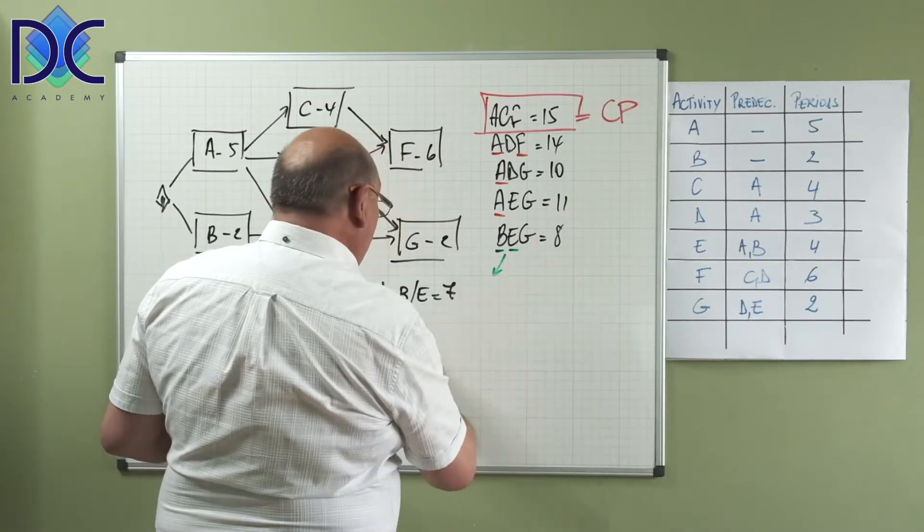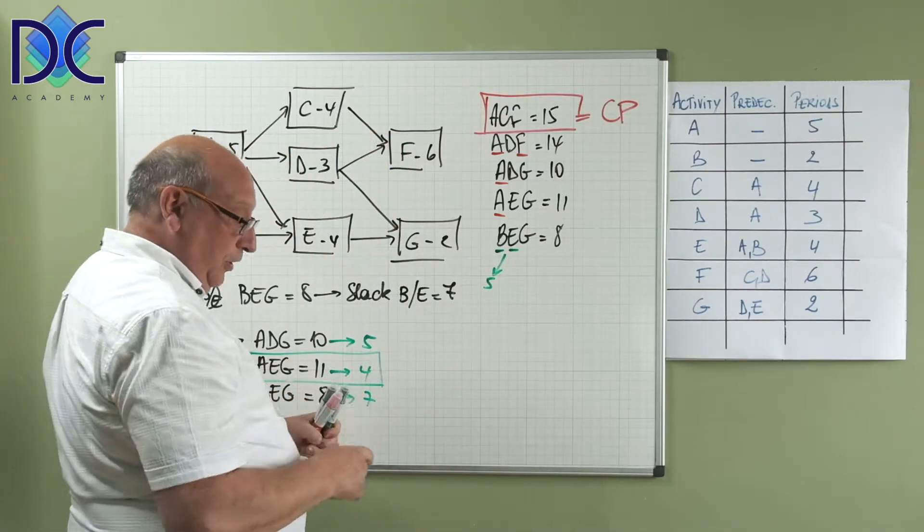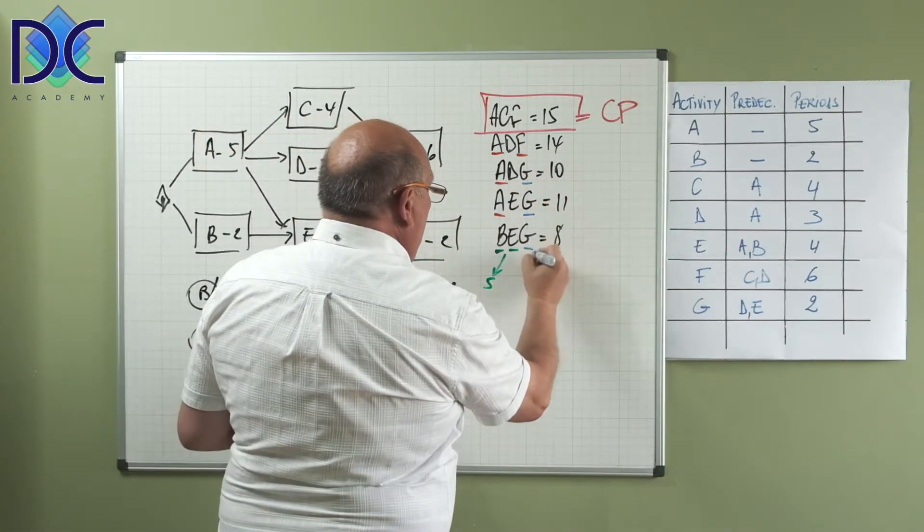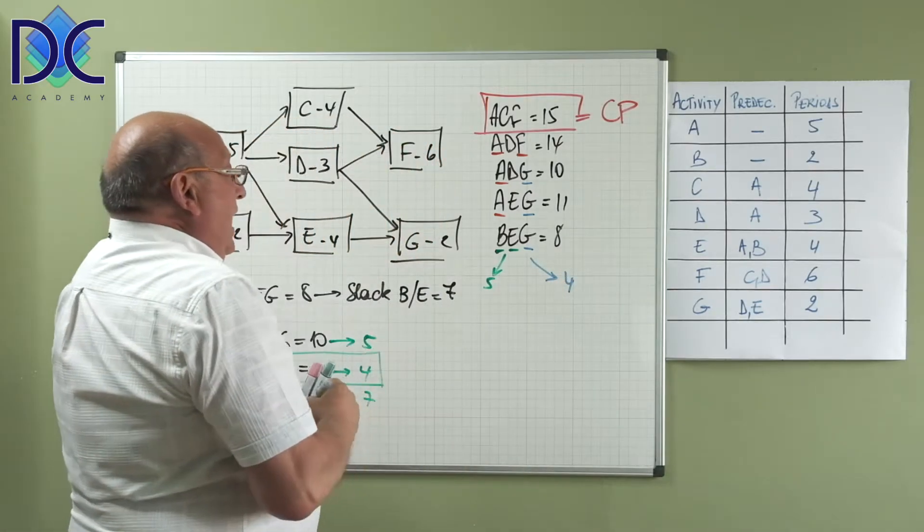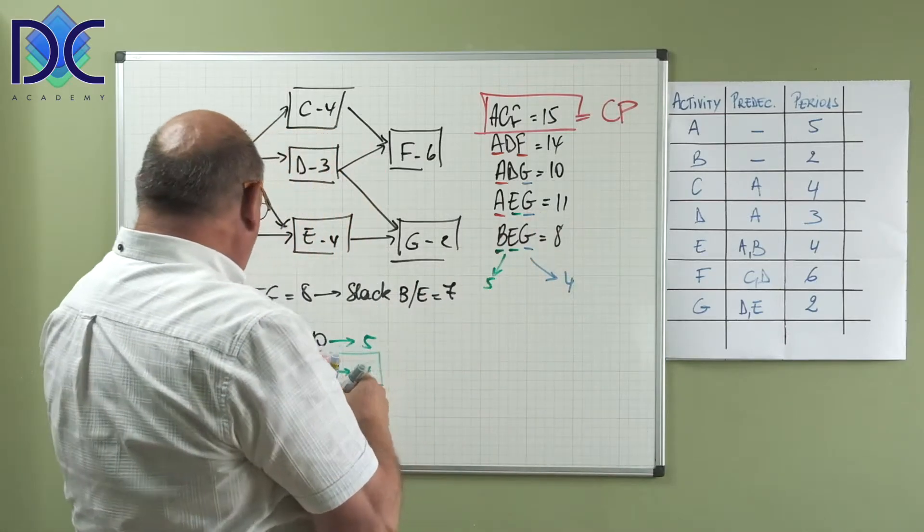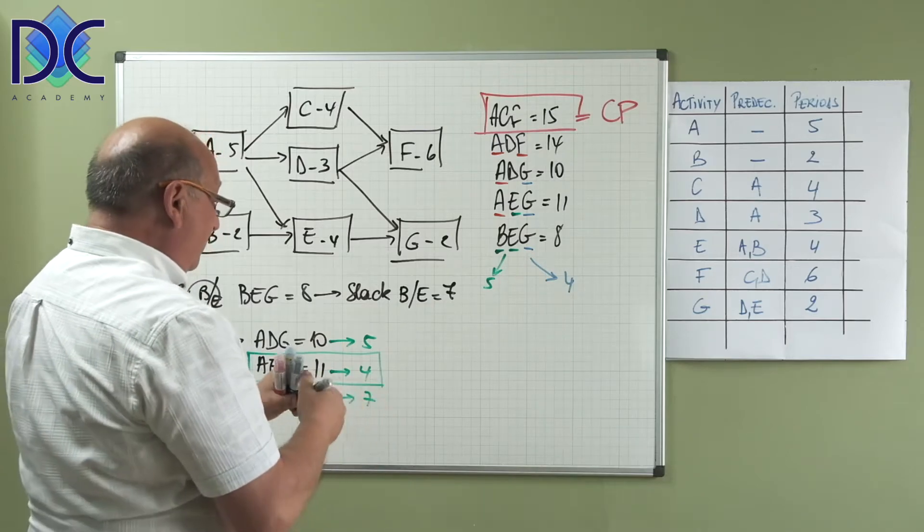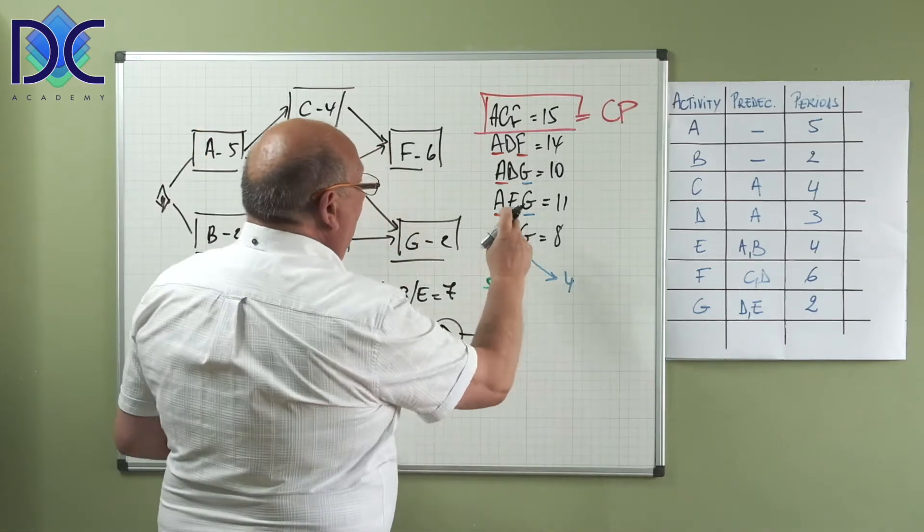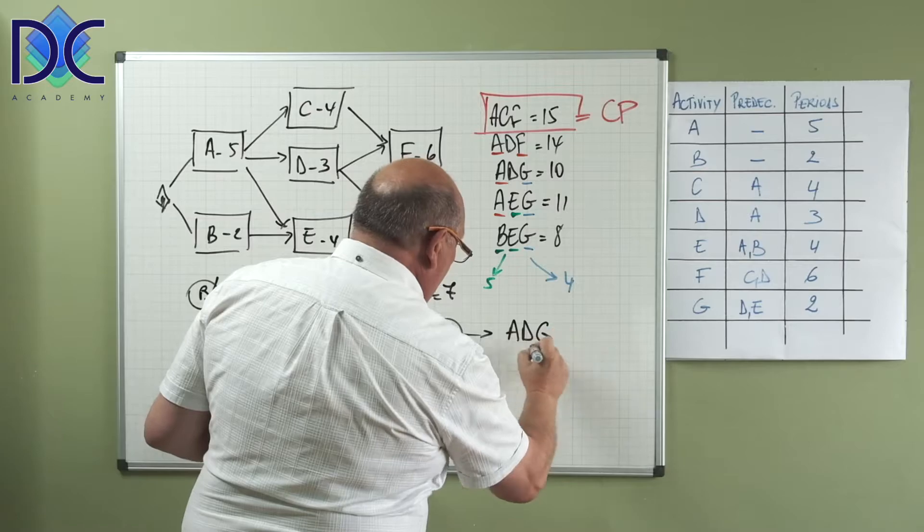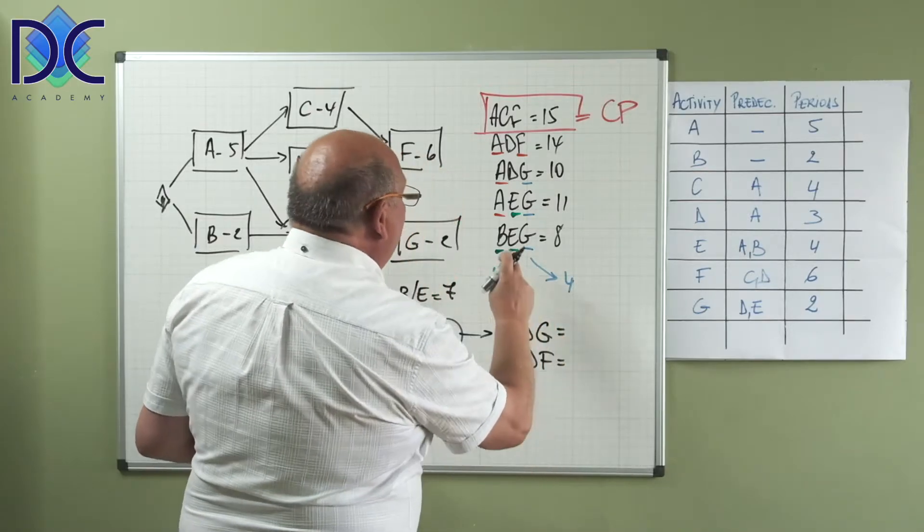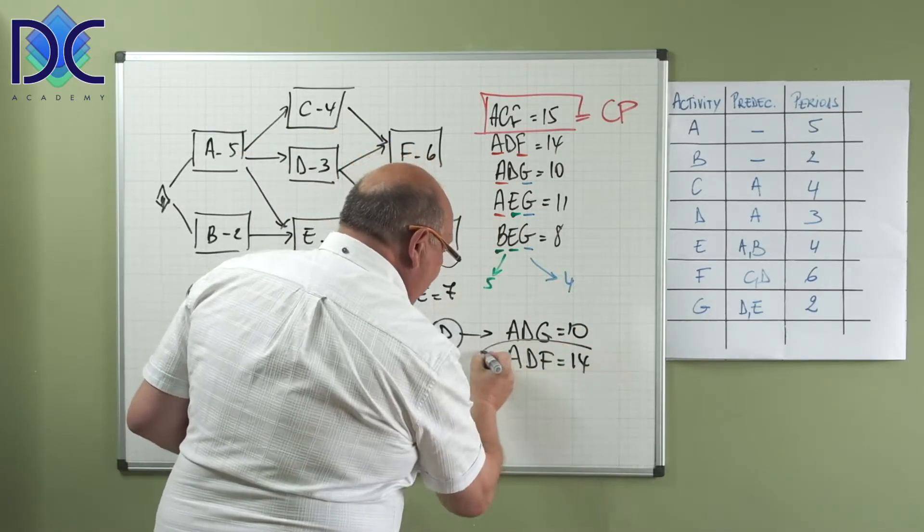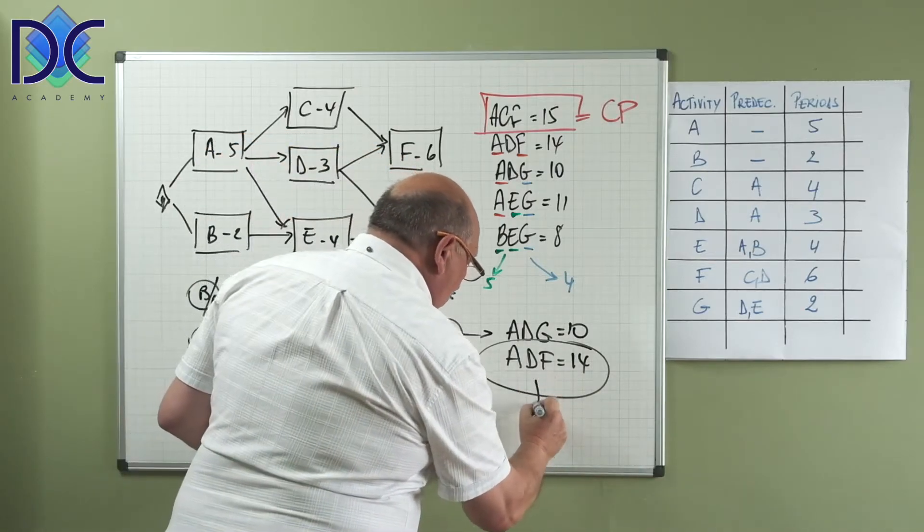So what did we find? We find B with the slack of 7. We find G with the slack of 4. And I still have D. D again is on two paths. When we have D, D is on the path ADG and ADF. On ADG we have 10, ADF we have 14, so basically we take 14.